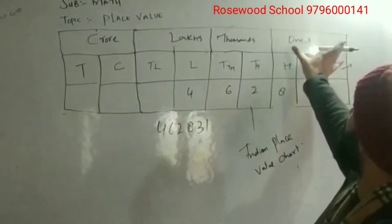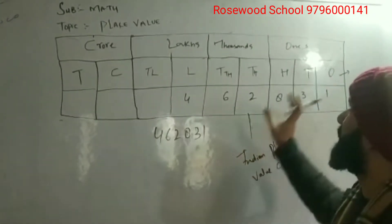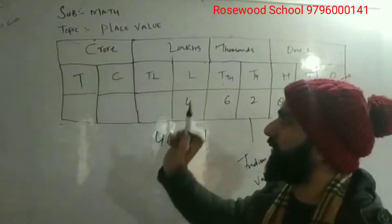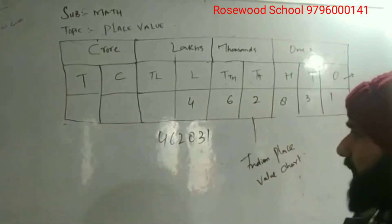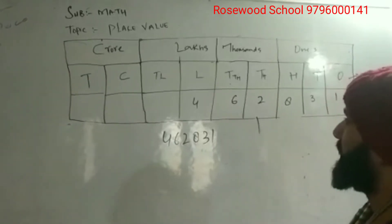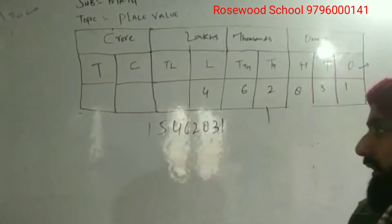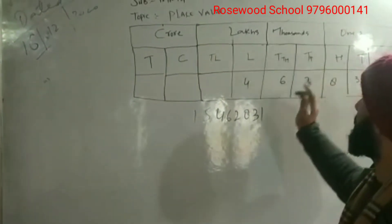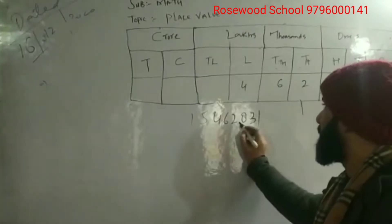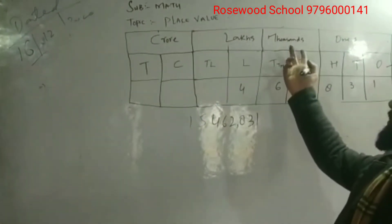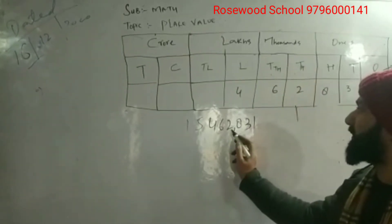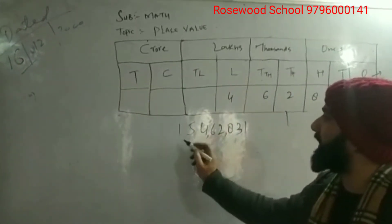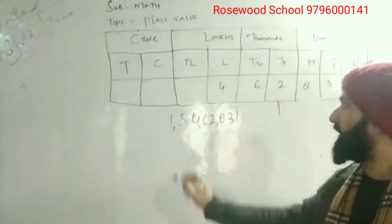In the Indian place value chart, we have groupings: ones, tens, and hundreds are in one range; then thousands and ten-thousands in one range; then lakhs and ten-lakhs in one range; and crores and ten-crores in one range. If I write the number in the Indian place value system, after three digits I put a comma, then after every two digits I put a comma — for thousands and ten-thousands, then lakhs and ten-lakhs. In this way we write the number in standard form with commas in the Indian place value system.